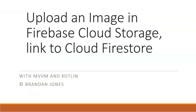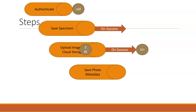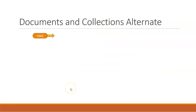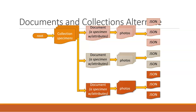In this video, we've seen how to upload an image to Firebase Cloud Storage and link it to Firebase Cloud Firestore. It's a multi-step process: authenticate using Firebase Auth, save our specimen, upload the photos, then create a photo metadata record that links the specimen in Firebase Cloud Firestore and the image in Firebase Cloud Storage. We're also expanding our collections and documents that alternate: users, then specimen, and now from specimen to photos. I hope this video was helpful, and I look forward to reading your comments. Thank you.